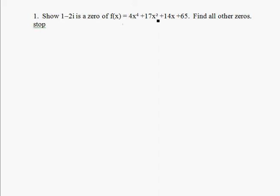Okay, we're going to show that 1 minus 2i is a zero of this 4th degree polynomial. So we want to show that it is a root, and then we want to find all the other zeros as well.